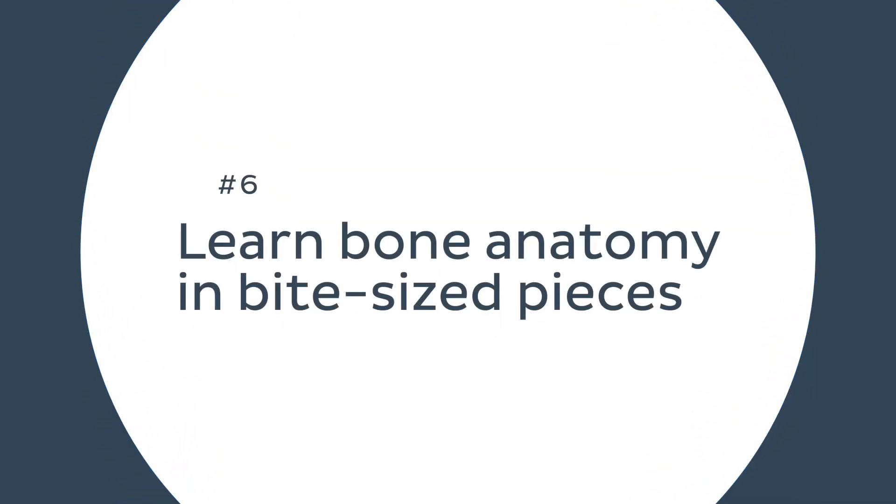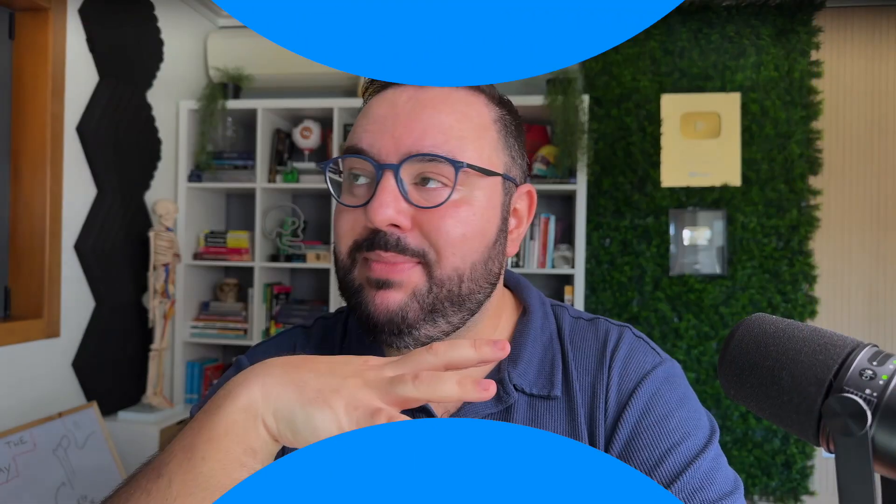Next tip on our list: learn bone anatomy with bite-sized pieces. Anatomy is a huge subject, and bones are just a slice of that huge subject, but they're still a big chunky slice of anatomy. So since I love cake so much, let's keep the analogy and say that the best way to eat a big slice of cake is by breaking it down into smaller pieces. Information overload is a real thing in anatomy, so breaking down that information into manageable pieces will make your life much easier.